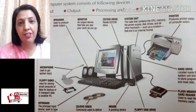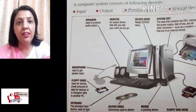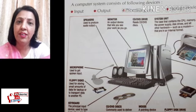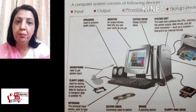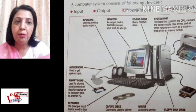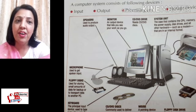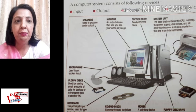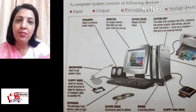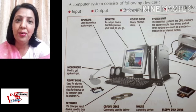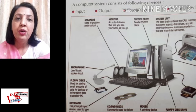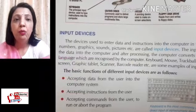The computer consists of the following parts: input parts, output parts, processing, and storage devices — all these things make a computer. In the diagram, you can see the input parts, output parts, the processing unit which is the CPU, and storage devices like CDs, floppy disks, and flash memories. Through this diagram you can better understand what the computer is and its peripheral and storage parts.